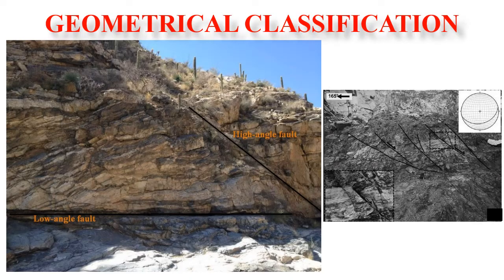Now we will study the geometrical classification of faults. Faults dipping at more than 45 degrees are called high-angle faults; faults dipping less than 45 degrees are called low-angle faults. In general, fault surfaces are curved — undulations of the fault surface are commonly seen in three-dimensional seismic data rather than in cross-section or profile.